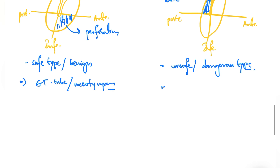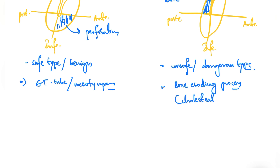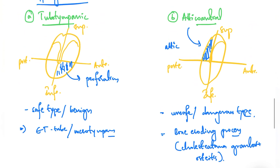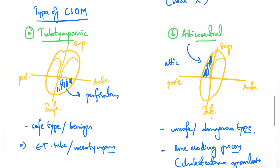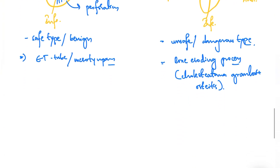The Tubotympanic type usually involves the Eustachian tube along with the mesotympanum. The Aticoantral type is associated with a bone-eroding process, which may involve cholesteatoma, granulations, or osteitis.